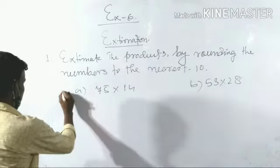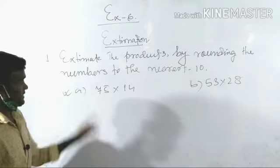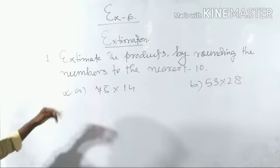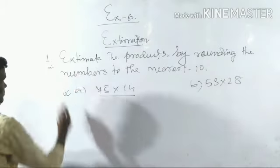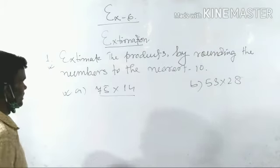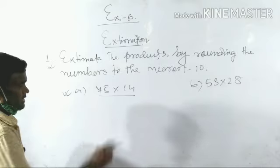The first question is 75 × 14. The question asks: estimate the products by rounding the numbers to the nearest ten.